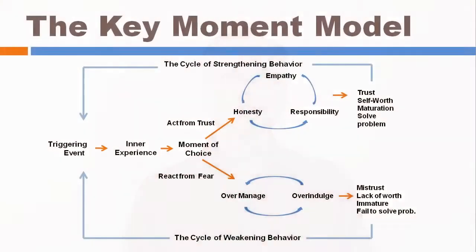Here's the key moment model. It indicates that there are two paths we can take when a key moment occurs. An event occurs and consciously or unconsciously we make a choice about how to respond. If unaware, or if strong emotion overrules our reason, we're likely to react out of fear or hostility, which leads us into the cycle of weakening behavior. In the cycle of weakening behavior, we either over-manage or we over-indulge our children. As the diagram illustrates, negative and usually unintended consequences flow from these behaviors: ill will, mistrust, sometimes power struggles, low self-esteem, diminishing of personal responsibility, and problems are only solved temporarily. Unfortunately, it's all too easy to get cycled into these weakening behaviors, which rob our children of their ability to be self-governing and cause them to be externally driven.